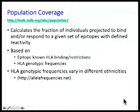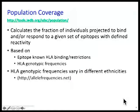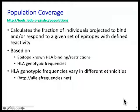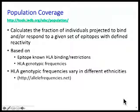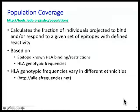What does this tool do? It basically calculates the fraction of individuals in a given population of known HLA frequencies that are predicted — inferred — to bind or respond to a given set of epitopes. This is based on the fact that different HLA types are found, there are many different HLA types, the frequency of each is variable, and the specific HLA frequencies differ in different populations. Obviously, we need HLA genotypic frequencies in order to perform this calculation.